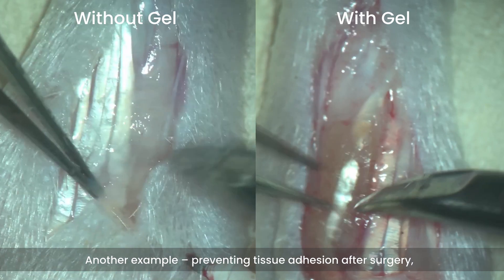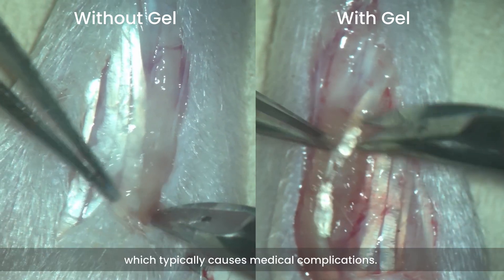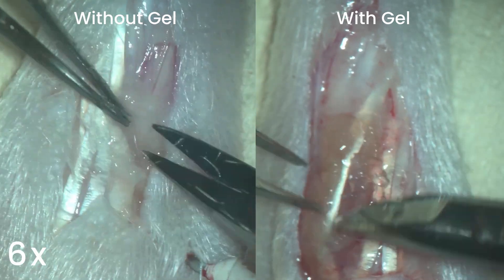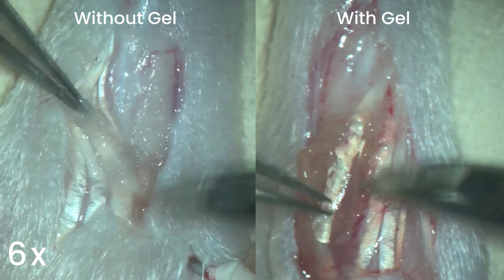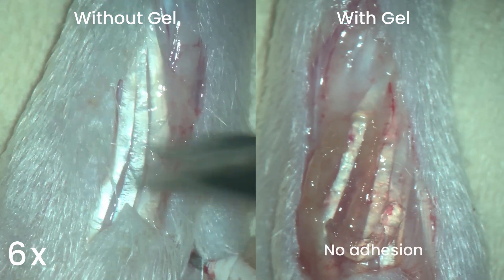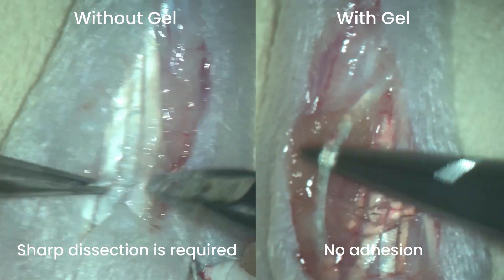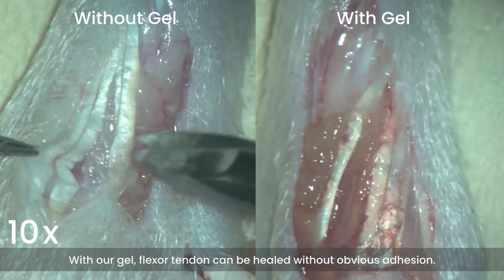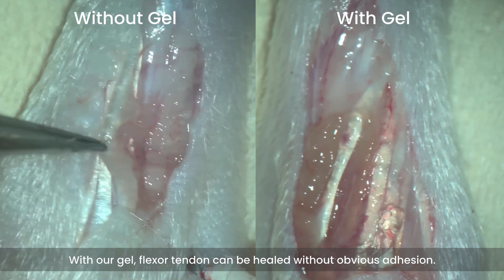Another example: preventing tissue adhesion after surgery, which typically causes medical complications. With our gel, flexor tendon can be healed without obvious adhesion.